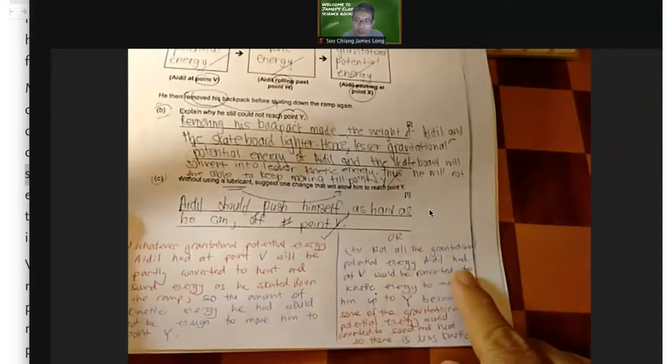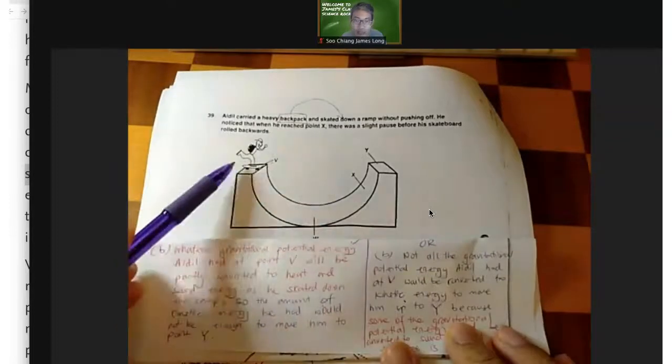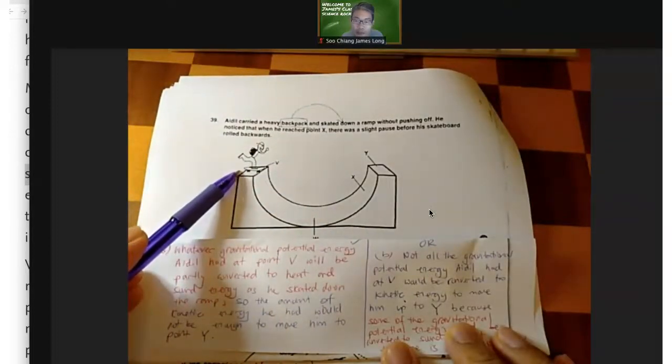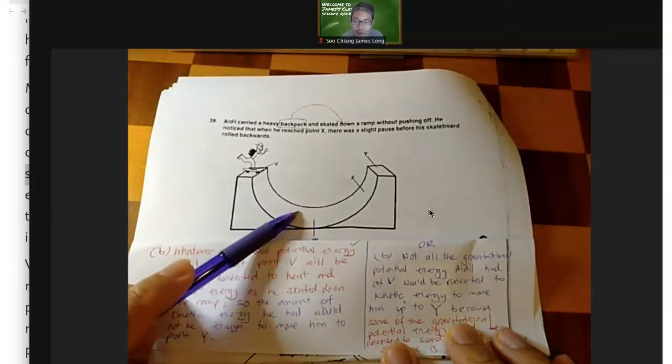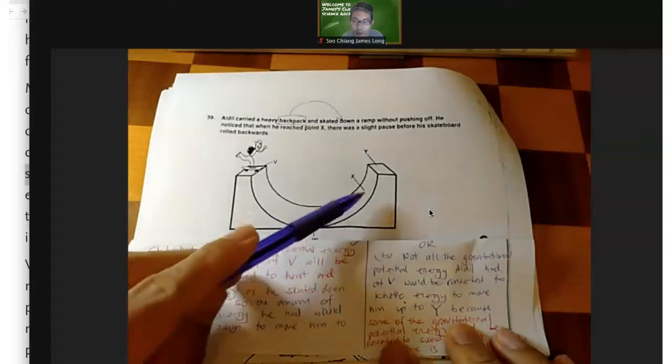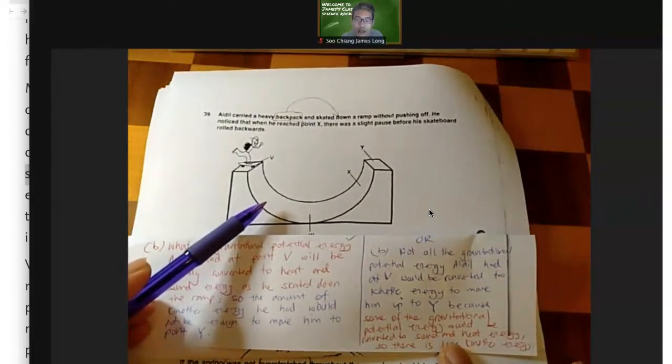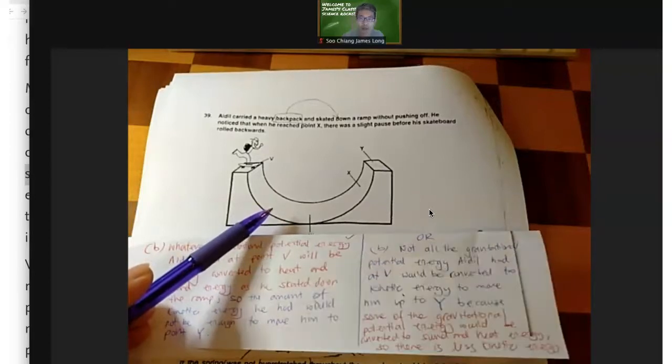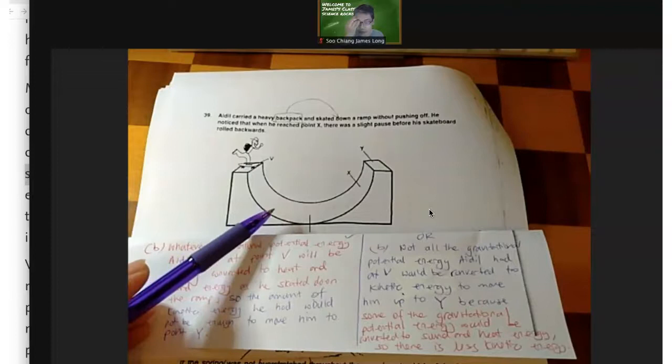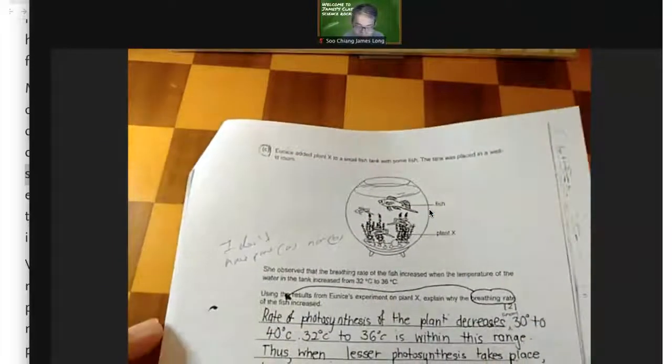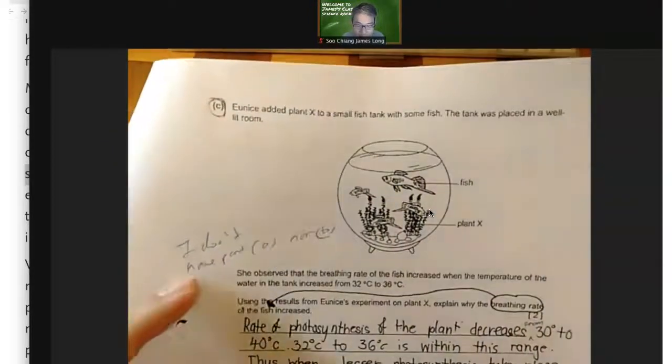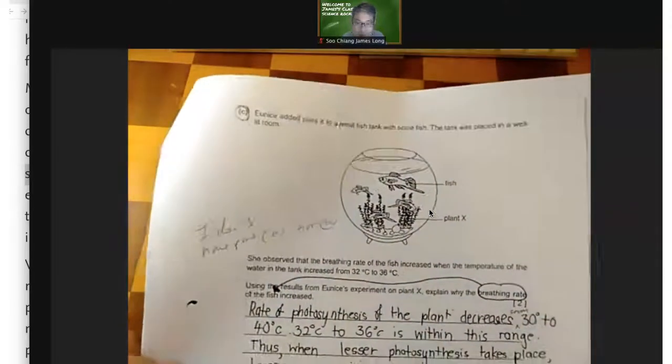Another way to answer it, if that helps you, is this: not all the gravitational potential energy Ideal had at point V would be converted to kinetic energy when he reaches this point to move him up to Y. Why? Because some of the gravitational potential energy would be converted to sound and heat energy. So there's less kinetic energy. If you want to move something further, you need more kinetic energy. If something has very little kinetic energy, it cannot move very far.